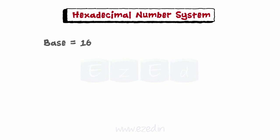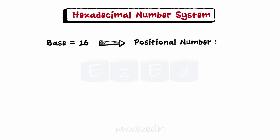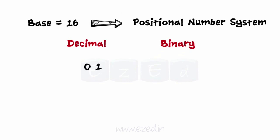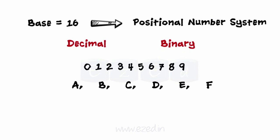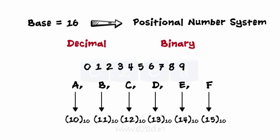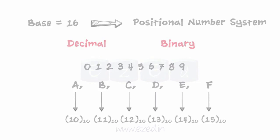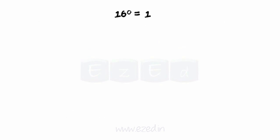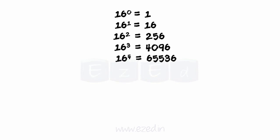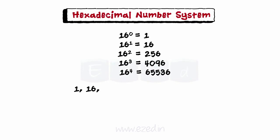Moving ahead with the hexadecimal number system. The hexadecimal base-16 number system is a positional number system, as are the decimal and binary number systems. It uses not only the Arabic numerals 0 through 9, but also the letters A, B, C, D, E, and F to represent the equivalent of 10 through 15 respectively. The base of the hexadecimal number system is 16, so each position represents a successive power of 16, with successive positions from right to left carrying these weights.